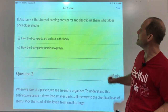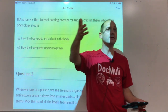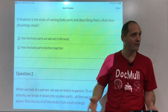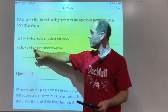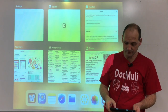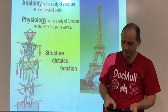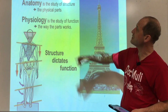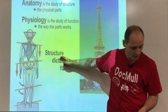Physiology is the study of how it functions — how the stuff works, how the body parts function together. So anatomy is the study of structure, physiology is the study of function, how it works.